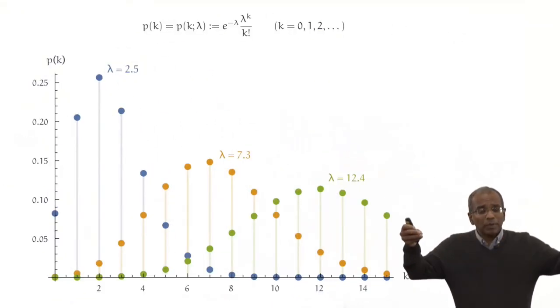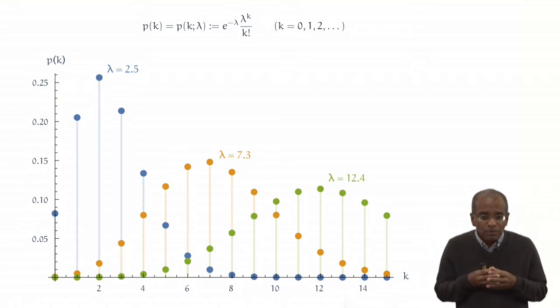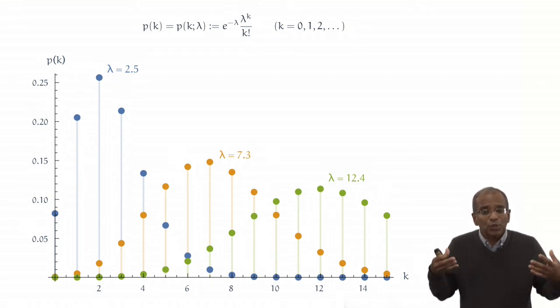So we start with the Poisson probabilities. Here is your distribution. And on your screen are displays of the Poisson probabilities for three particular choices of the parameter lambda: lambda being 2.5, 7.3, and 12.4. Of course, you understand that by virtue of proper normalization, all of these probabilities for a given lambda must add to 1.